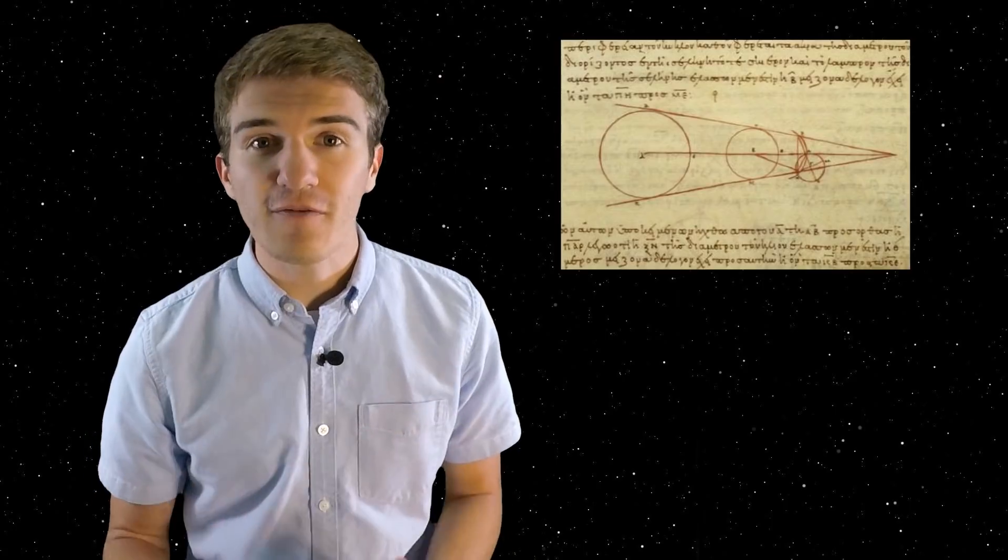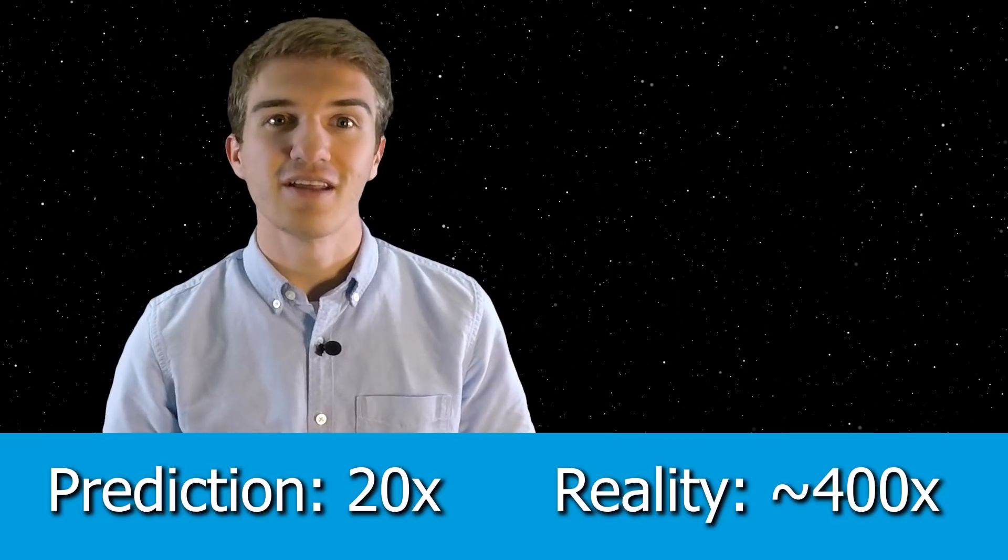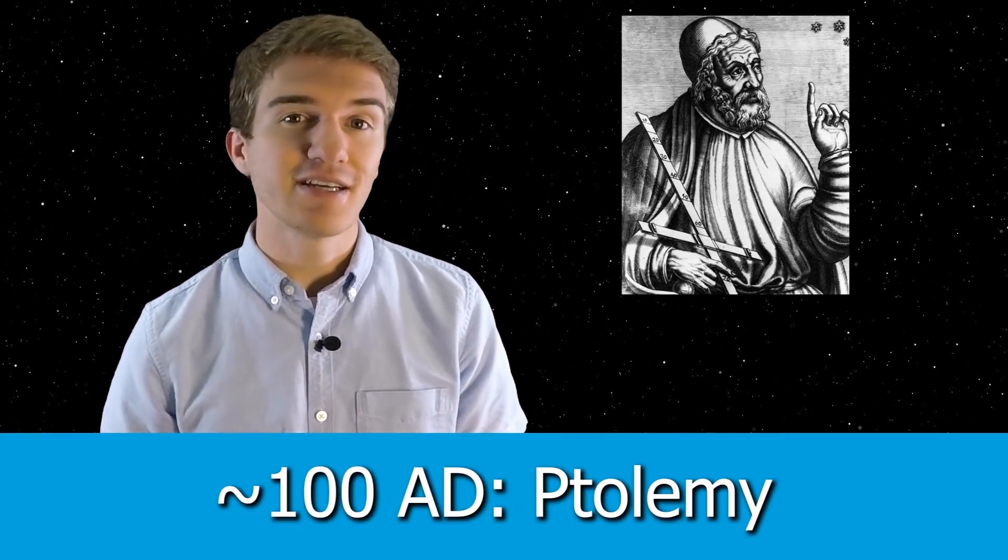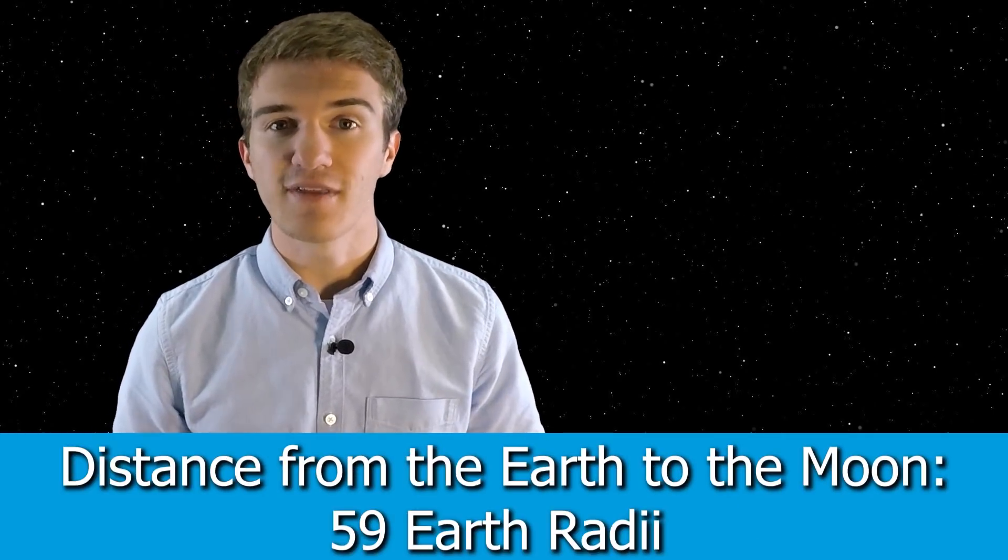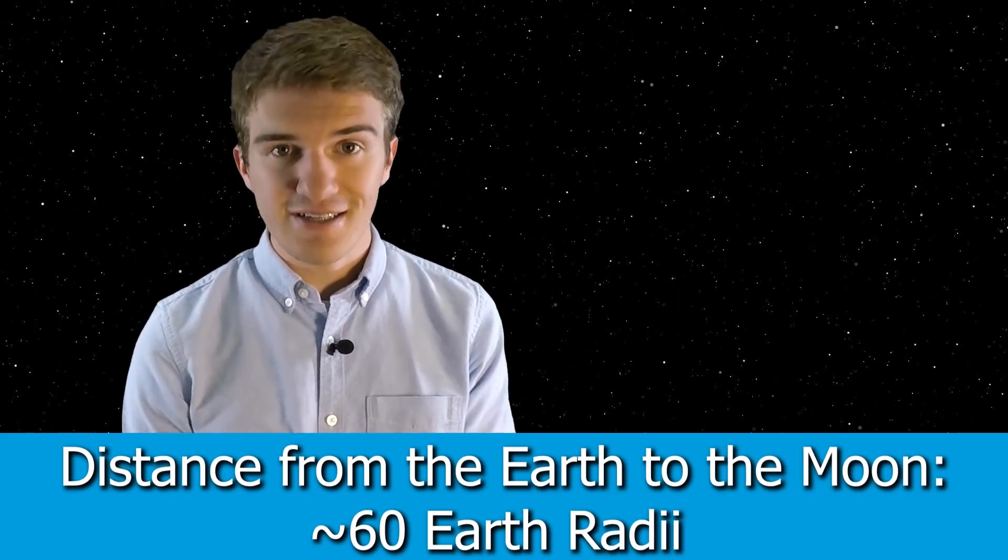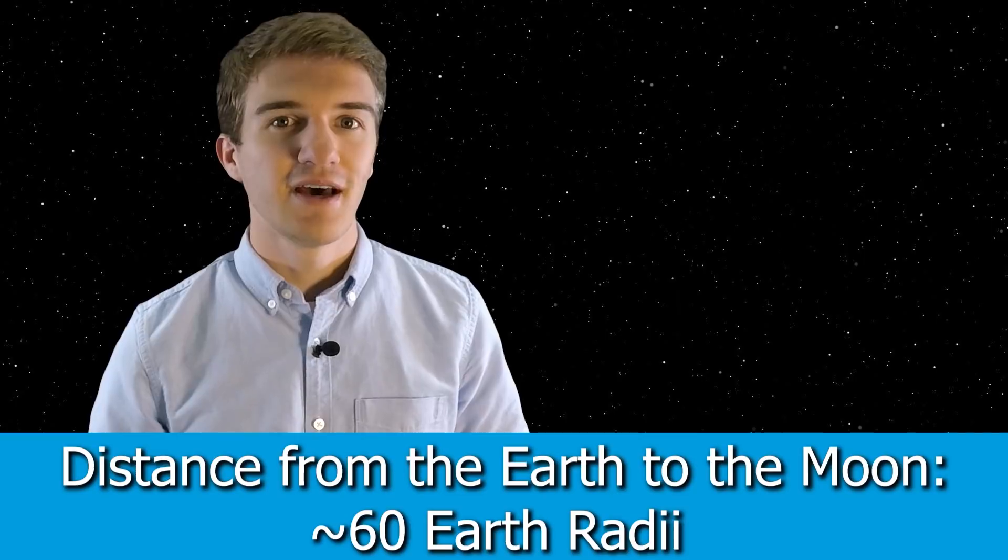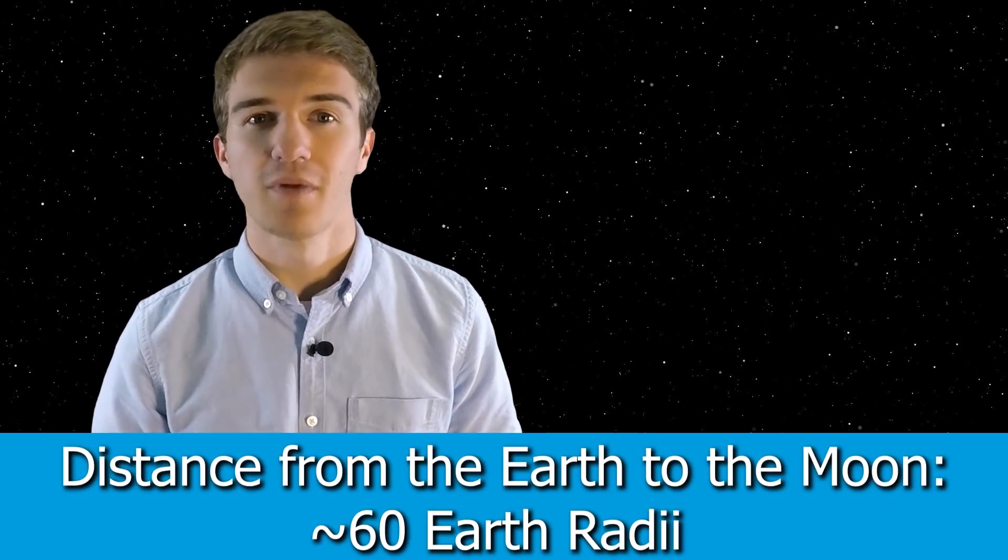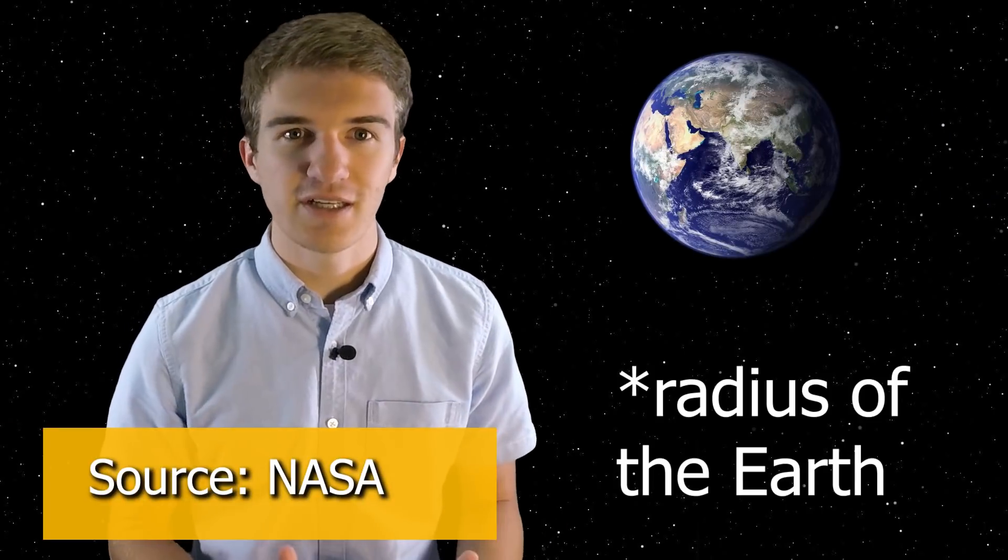Around this same time, Aristarchus of Samos observed that the Earth is about 20 times closer to the Moon than it is from the Sun. This was one of the first observations to determine the distance between the Earth and the Moon. The actual value is 400 times. But a much better approximation would come in the year 100 AD, when Ptolemy estimated the distance is about 59 times the radius of the Earth, and the real value is 60 times.